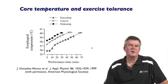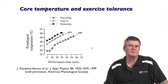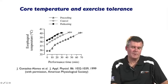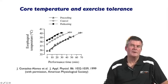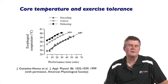In terms of body core temperature as a determinant of exercise performance, a number of studies have correlated core temperature during exercise with the ability to continue exercising. Either preheating or precooling impacted upon exercise tolerance. The rise in body core temperature and the associated cardiovascular consequences is associated with fatigue during prolonged strenuous exercise.